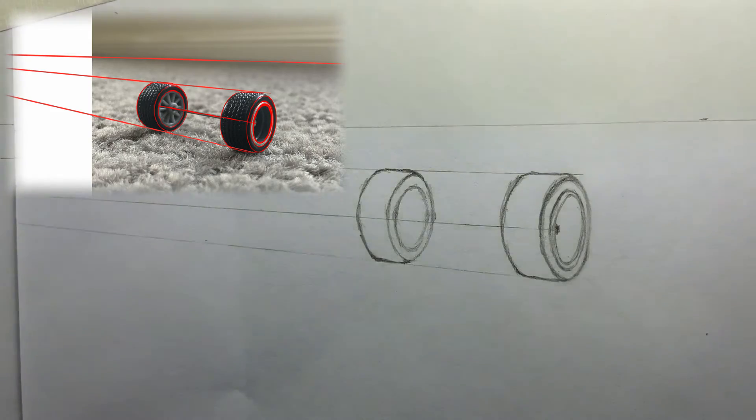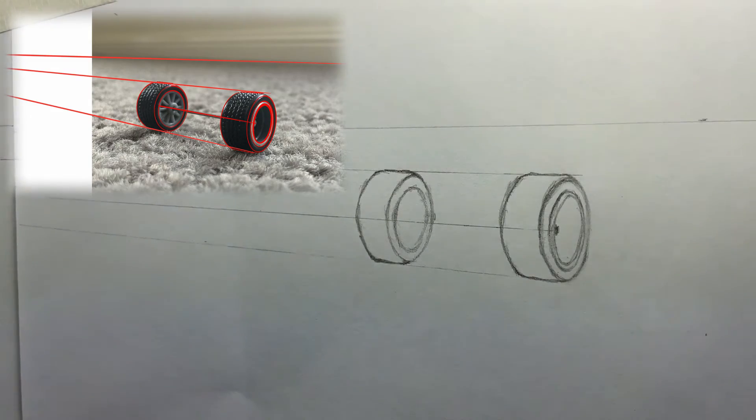We'll sketch in the axle now. In about the center of the back wheel but a bit to the right, draw a dot on the center perspective line.